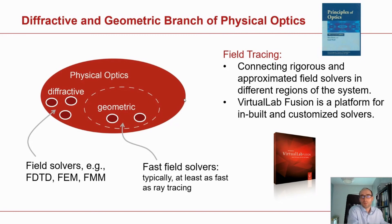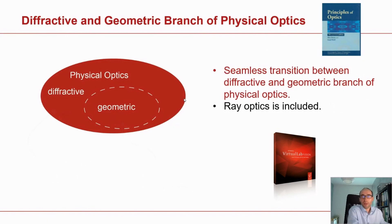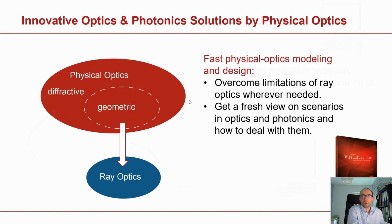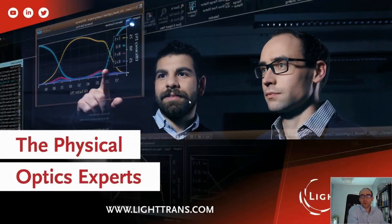Another interesting thing is this seamless transition between diffractive and geometrical optics. These two branches also include the fact that ray tracing is automatically included in physical optics — if you take physical optics and reduce the amount of information of the light propagation, you end up in ray optics, which can be derived mathematically from this theory. The benefit of using physical optics against ray tracing is to overcome limitations from the reduced information in ray tracing, enabling a fresh view on scenarios in optics and photonics and allowing new ways to optimize and analyze them. Thank you very much for your attention.